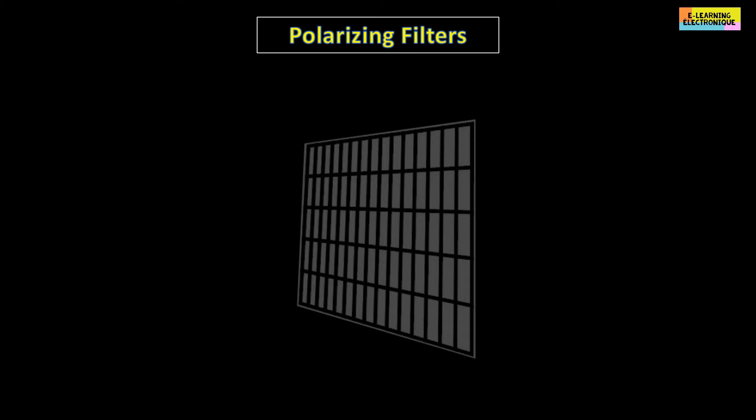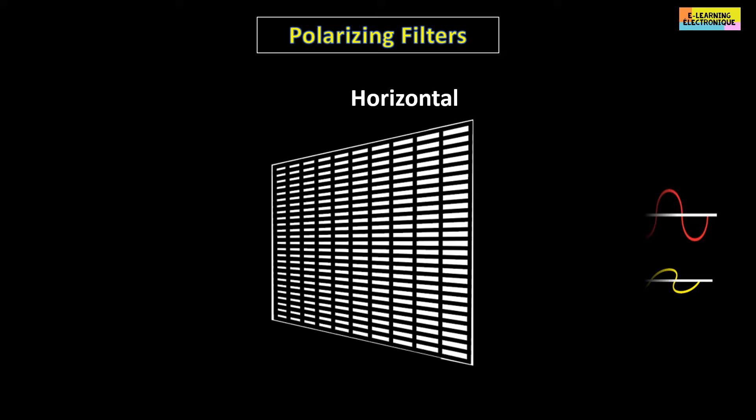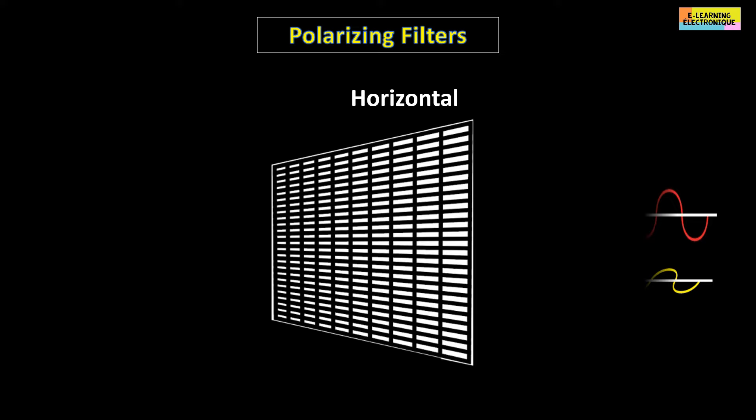When this light passes through a polarizing filter, only one of the components will pass through. If the polarizing filter is vertical, only the vertical component of the light will pass through. If the polarizing filter is horizontal, only the horizontal component of the light will pass through it.